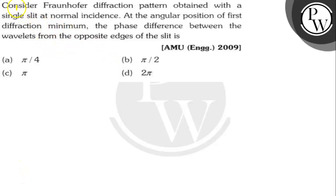Hello Bacho. This is the question. The question says here: Consider Fraunhofer diffraction pattern obtained with a single slit at normal incidence. At the angular position of first diffraction minimum, the phase difference between the wavelets from the opposite edges of the slit is what?